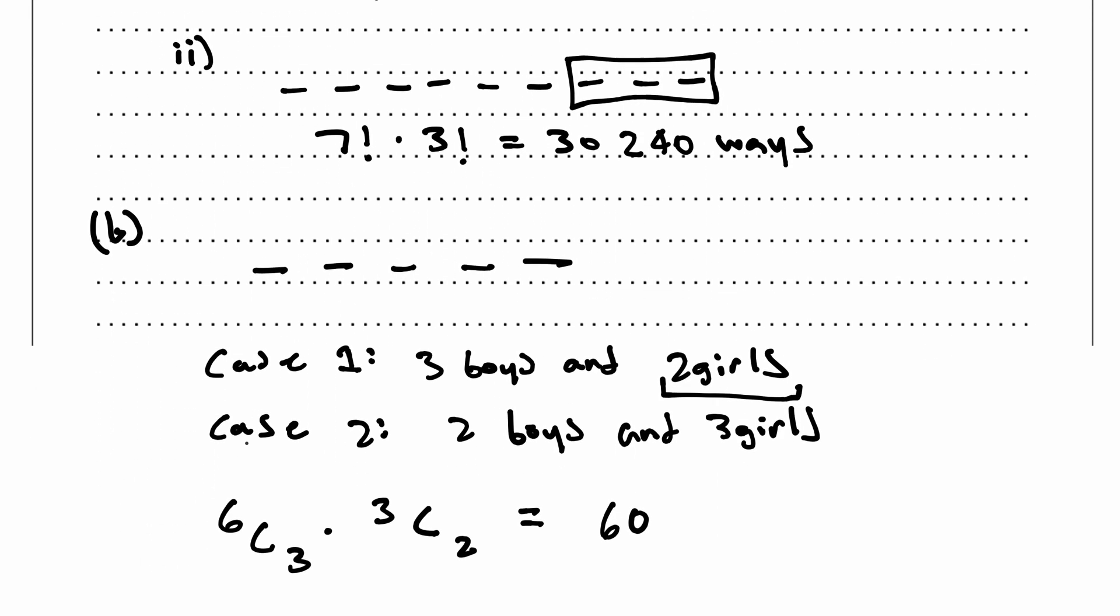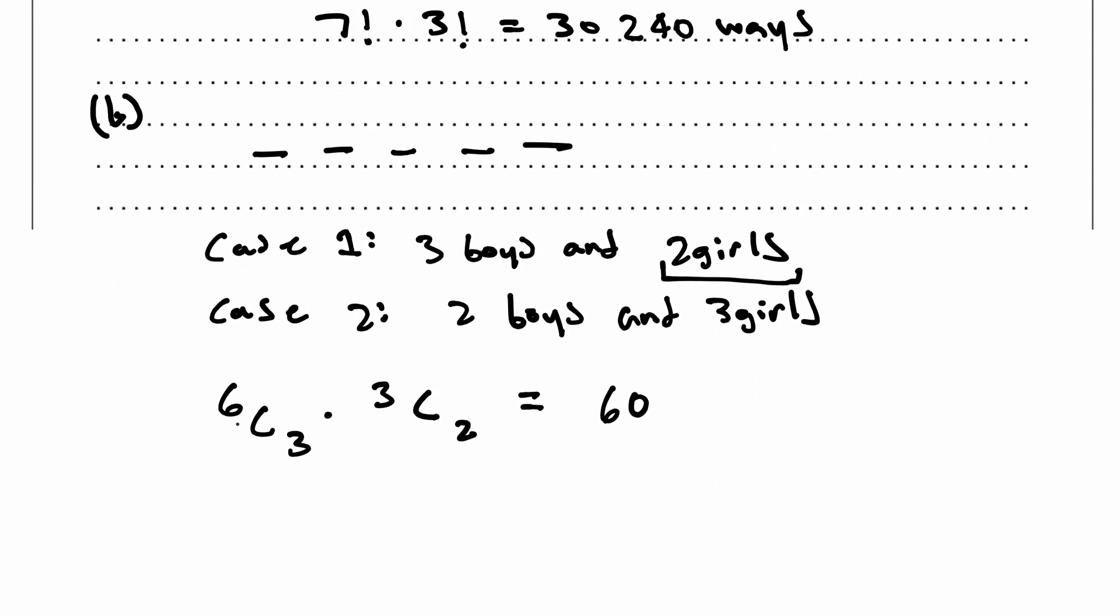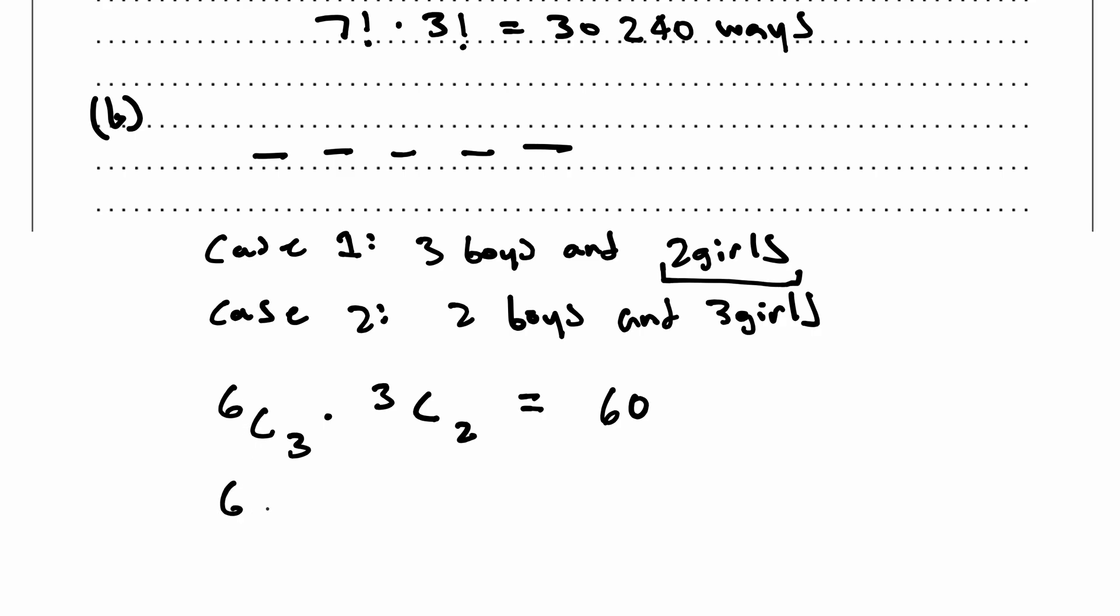Second, case two. Now, of the six boys, I can only choose two. Of the three girls, I choose all three. So what do I get now? Putting this onto my calculator, you get 15.